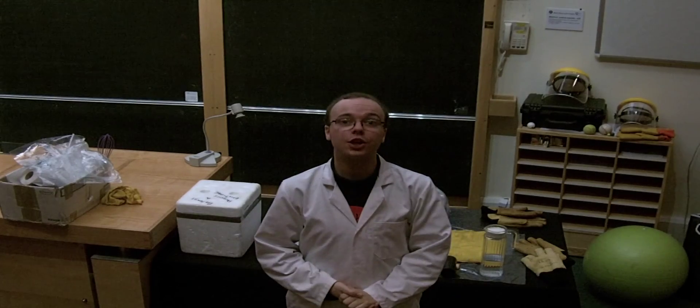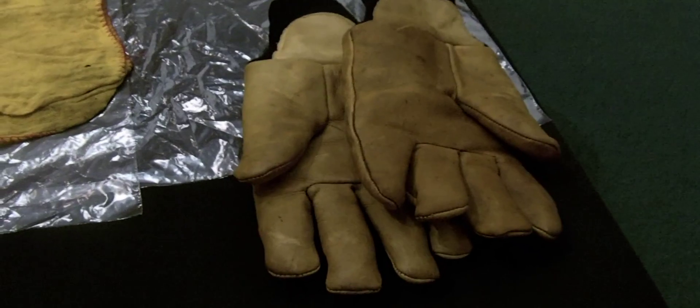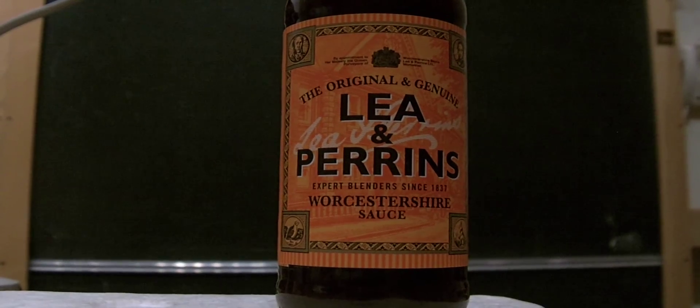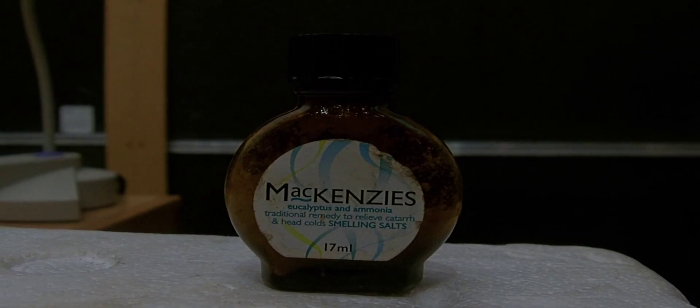To make your own comet, you will need some water, a bowl with some plastic bags, some cloths, a pair of gloves, a pair of plastic cups, Worcester sauce, ammonia, a hammer or mallet, some soil and mud, and finally some dry ice.